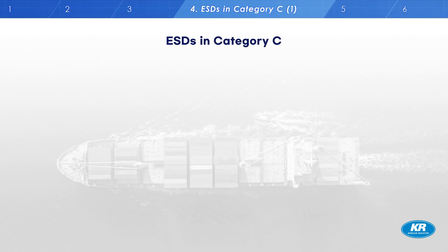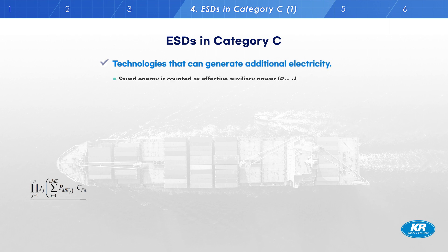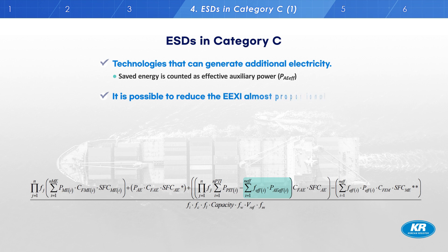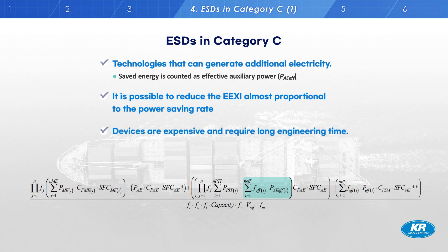Now, ESD Category C. ESDs in Category C are technologies that can generate additional electricity. Category C ESDs can also reduce the EEXI rating almost proportionally to the power saving rate. However, these devices are also very expensive, require a long engineering time, and few have a proven track record.